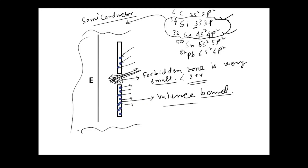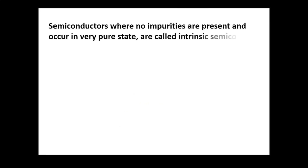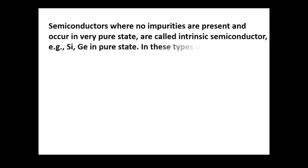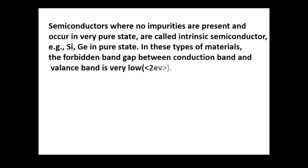Semiconductors that occur in a very pure state are called intrinsic semiconductors. For example, silicon and germanium in pure state. In these materials, the forbidden band gap between the conduction band and valence band is very low — less than 2 electron volts.